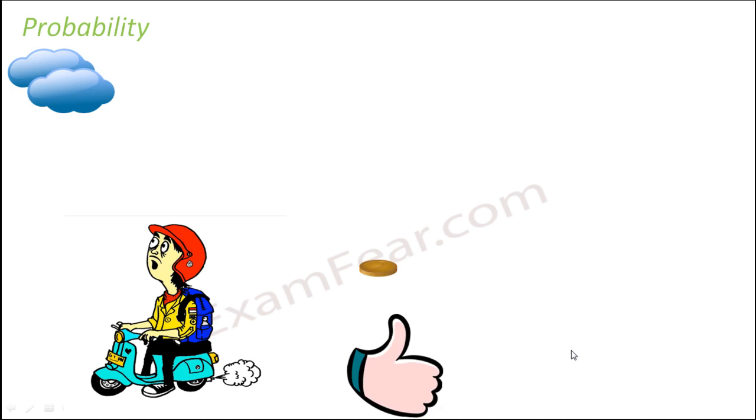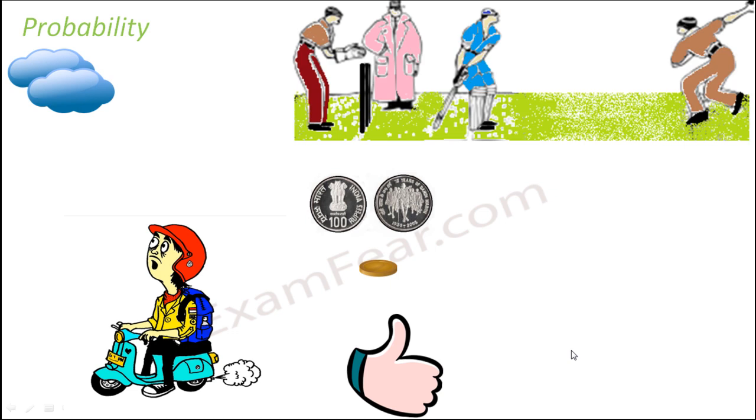When you toss a coin, you are not sure whether it will be a head or a tail. You don't know. So there are chances that it might be a head, there are equal chances that it might be a tail as well. So these are your possibilities.